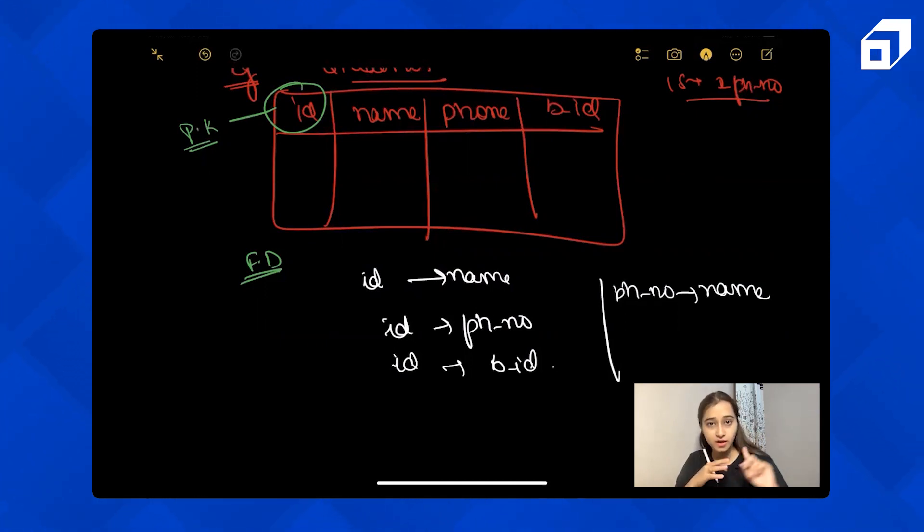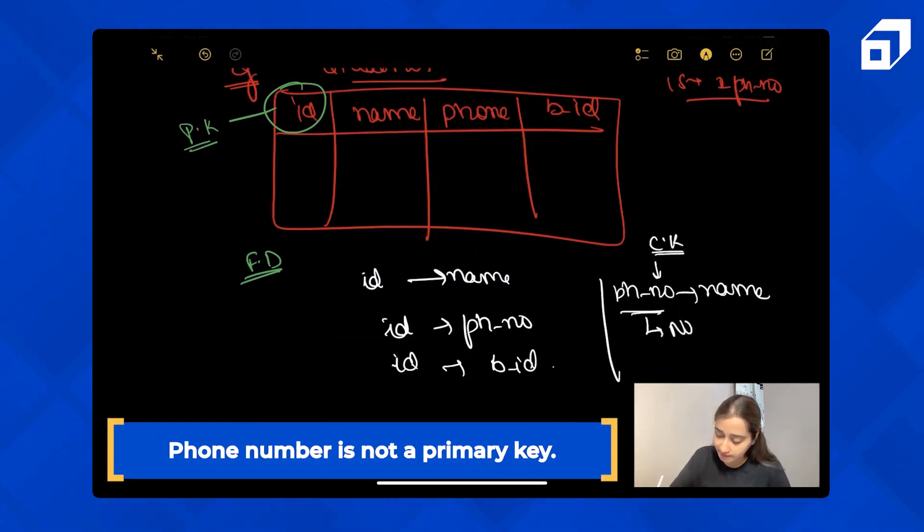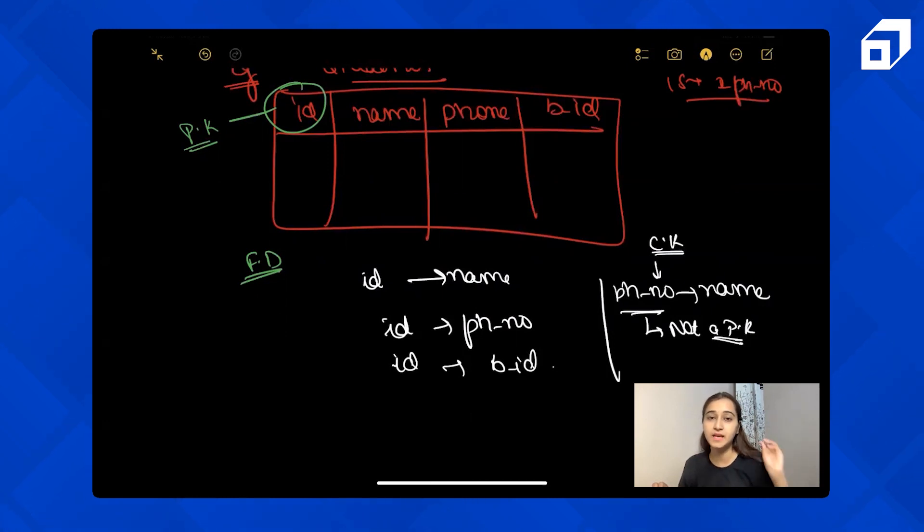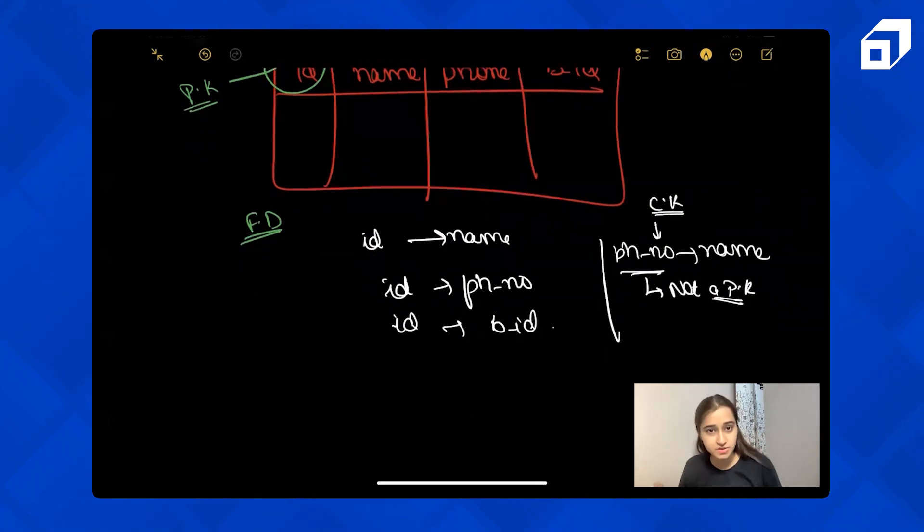First check if it is in 3NF. It's in 3NF because phone number is a part of a candidate key. Now comes BCNF. Is it in BCNF? No. Why? Because phone number is not a primary key and BCNF just says it should be a primary key. So it violates BCNF.